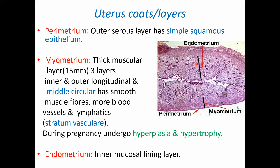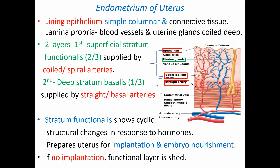The endometrium layer of the uterus is lined by simple columnar epithelium with connective tissue. The lamina propria has blood vessels and uterine glands coiled in the deep surface. There are two layers: the superficial stratum functionalis, about two-thirds, supplied by coiled or spiral arteries; and the deep stratum basalis, about one-third, supplied by straight basal arteries.